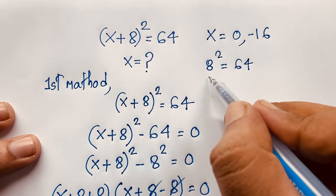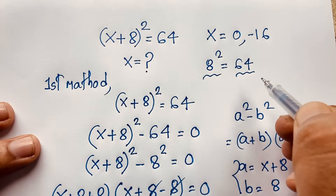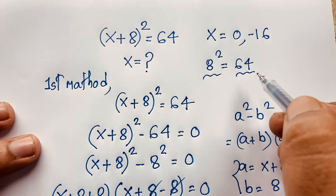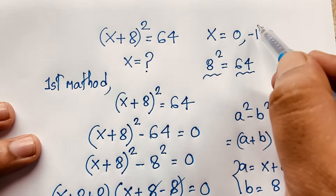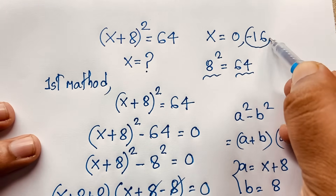In this math problem, the left-hand side and right-hand side — both sides — are equal. So x = 0 is verified.